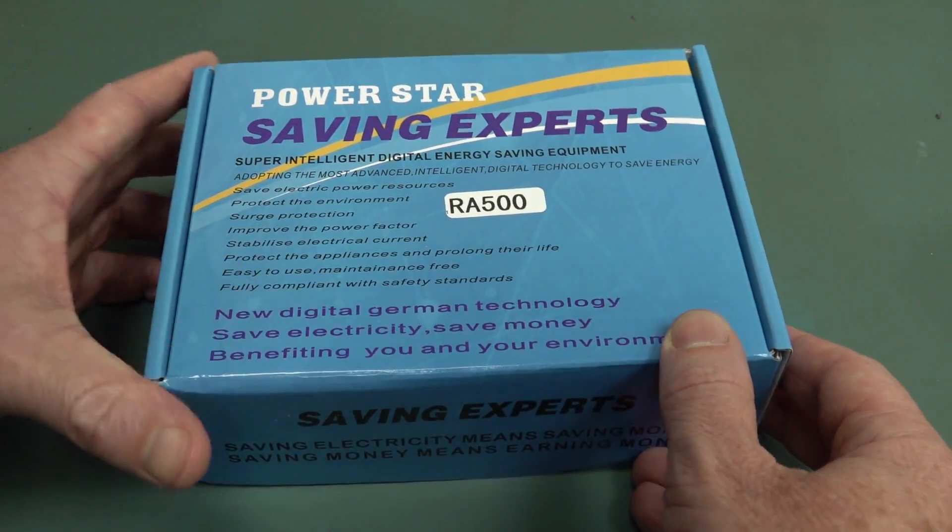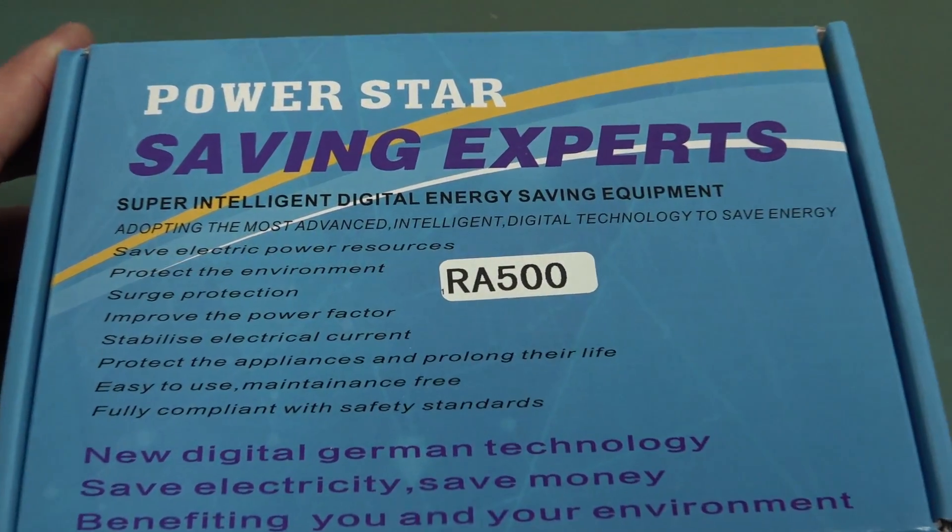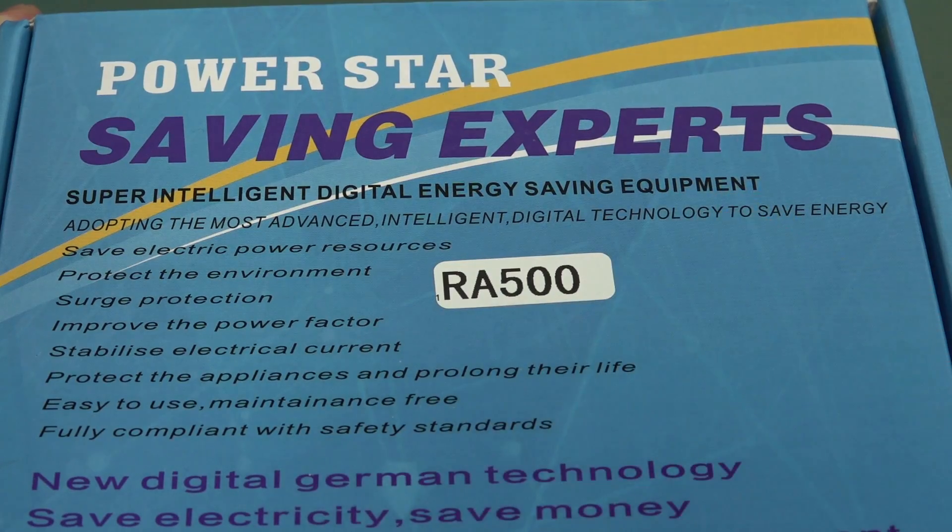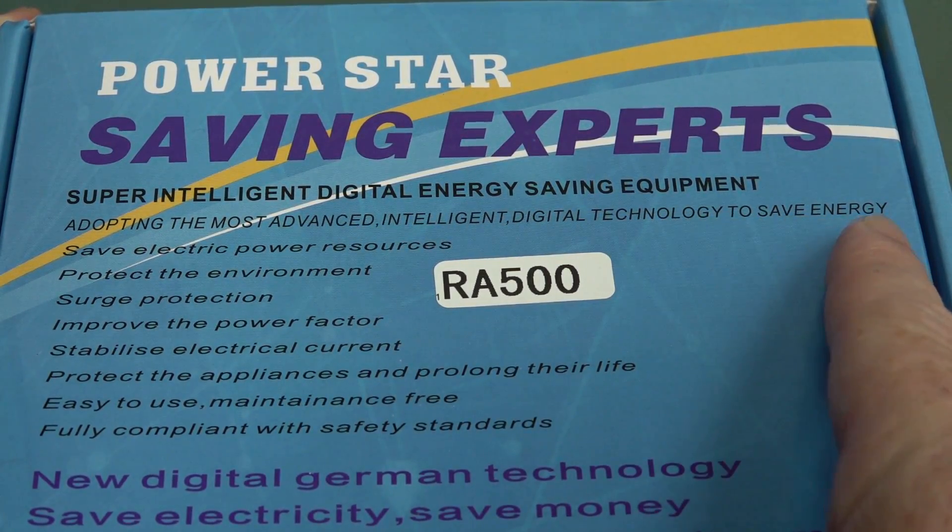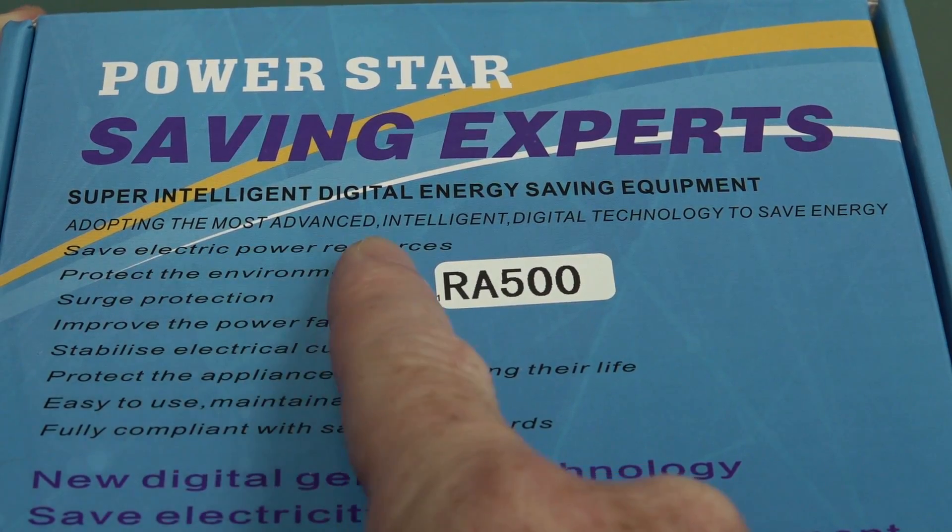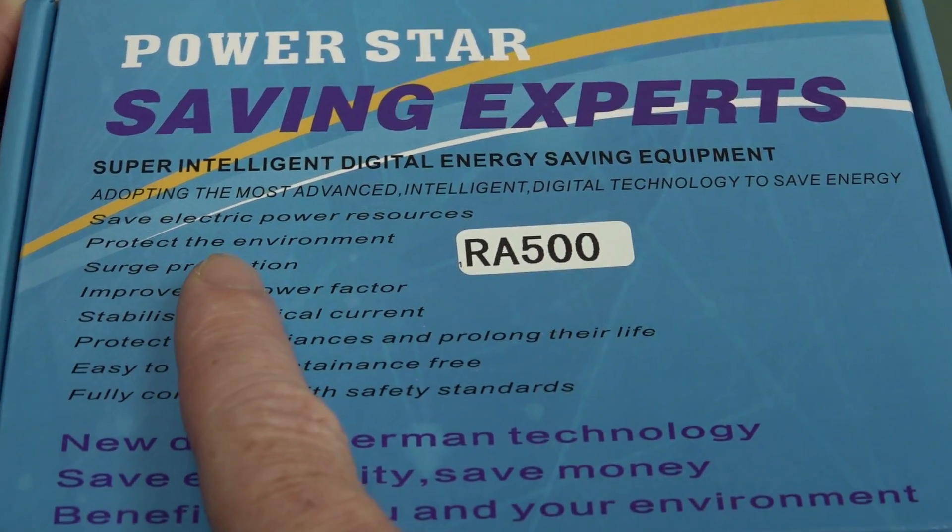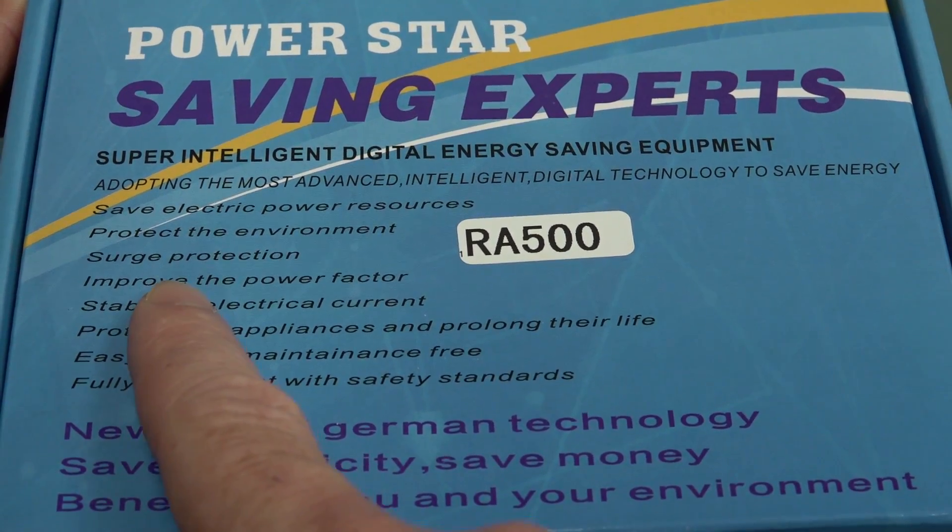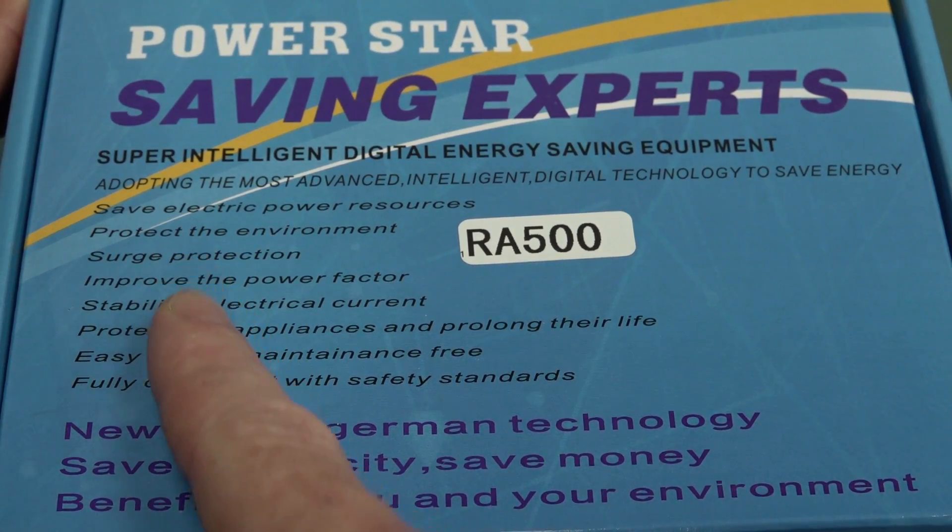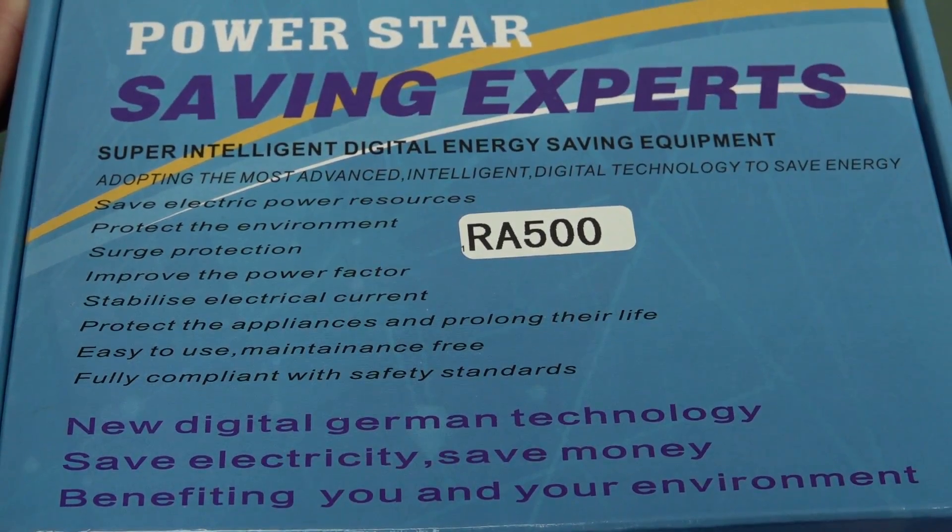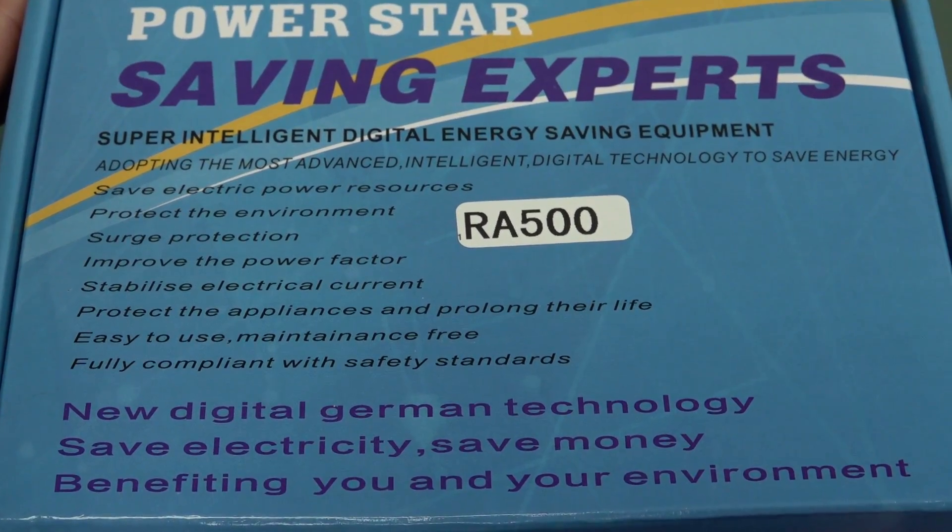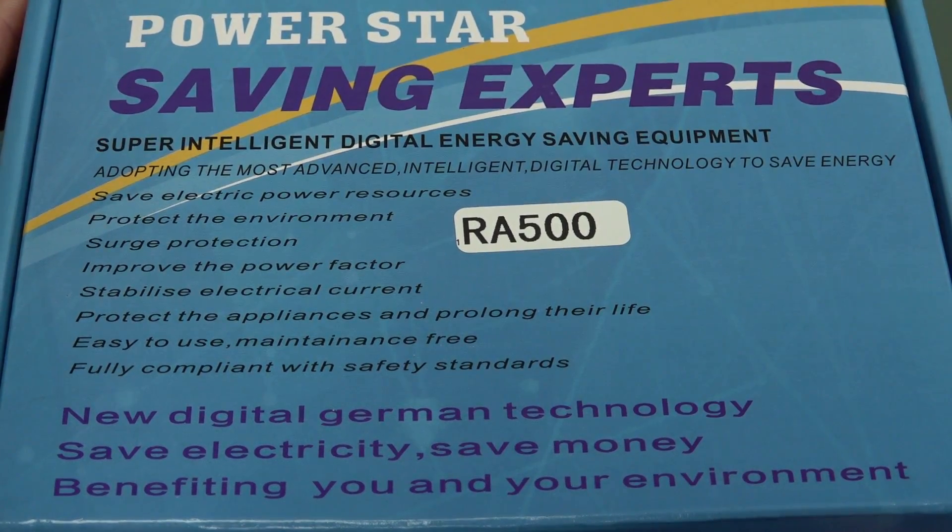But this one, look at this. This is super-intelligent digital energy-saving equipment. Adopting the most advanced intelligent digital technology to save energy, protect the environment, surge protection. They've got a MOV in there, maybe. Improve the power factor. Of course, because there's probably just a power factor correction capacitor in this thing.